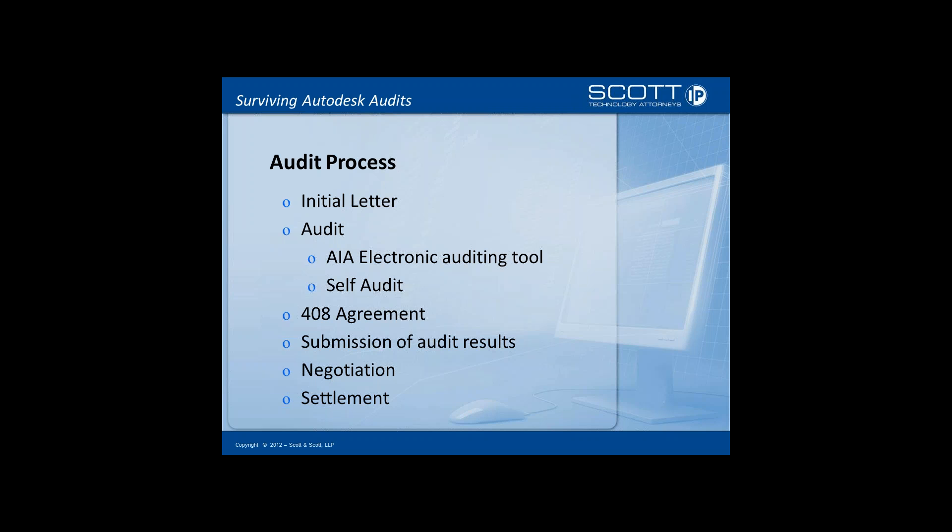The audit process is lengthy and depends on the nature of the audit and the company involved. It starts with an initial letter, followed by the audit itself using methods ranging from the AIA Autodesk electronic auditing tool to self-audit. Prior to submitting results, most clients obtain a Rule 408 agreement, which is an interim confidentiality agreement. They then submit audit results and await an initial settlement demand from Autodesk, the BSA, or SIA, after which negotiation ensues and a settlement is agreed upon.